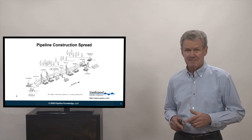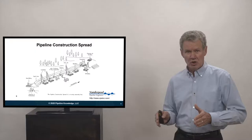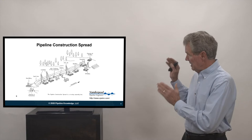This slide shows a pipeline construction spread. It was given to me by my good friend David Vanderpool of Vanderpool Pipeline Engineers. You can think of a pipeline construction spread as a moving assembly line. The materials are spread along the route and the equipment that fastens these materials together and puts them in the ground moves along the line.